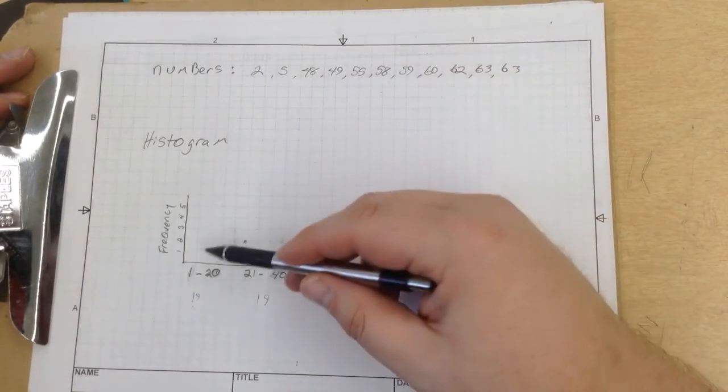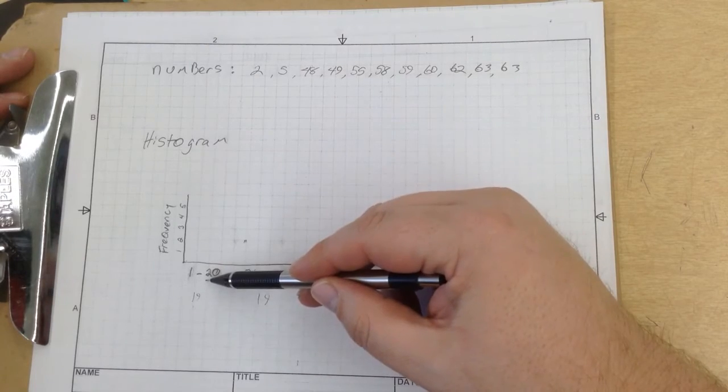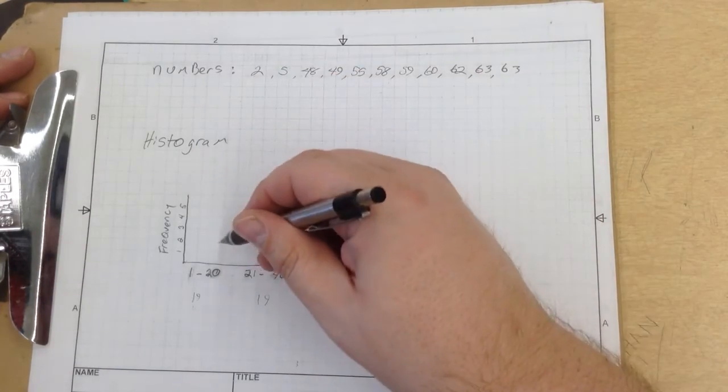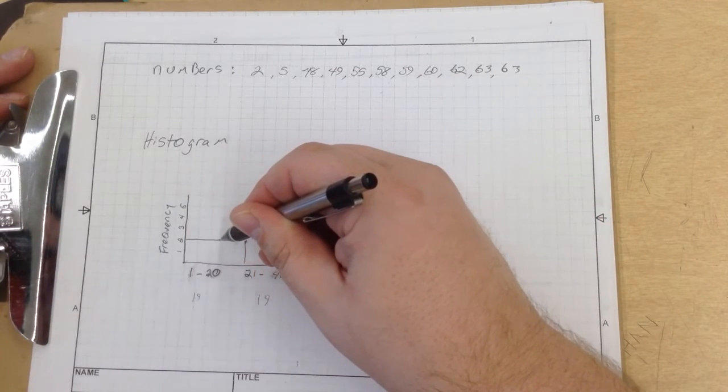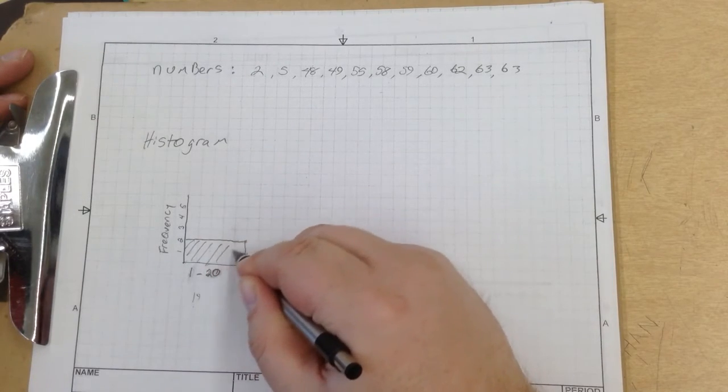Now, when we plot this, all we have to do is figure out our numbers. So we have 2 and 5. That goes through the 1 through 20 right here. So we have 2 numbers right there. And I am going to go up there and just shade it in like there.